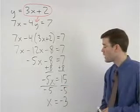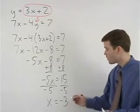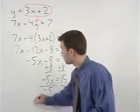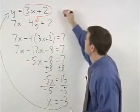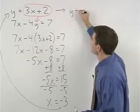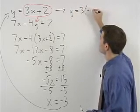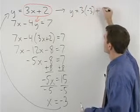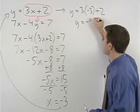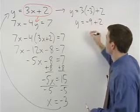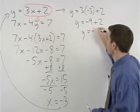To find y, plug a negative 3 back in for x in the first equation to get y equals 3 times negative 3 plus 2, which simplifies to y equals negative 9 plus 2, or y equals negative 7.